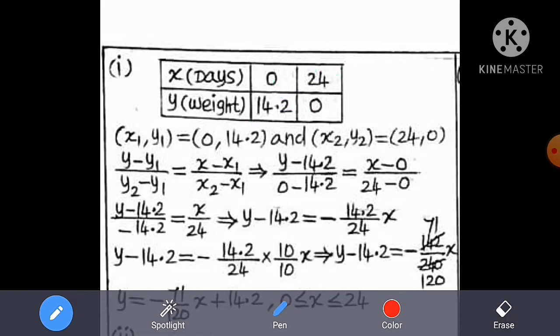Now in this point, we will form the first relation. 0, 14.2, that is x1, y1. And 24, 0, that is x2, y2. Now we will form the equation.